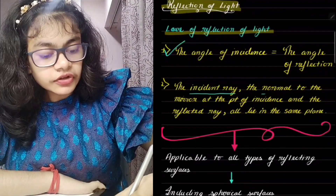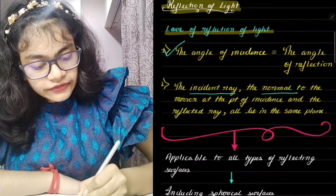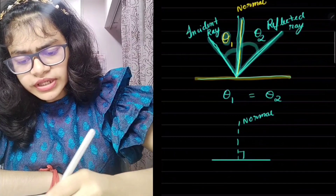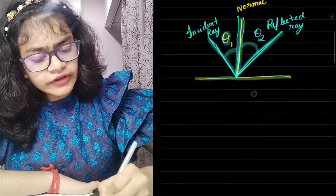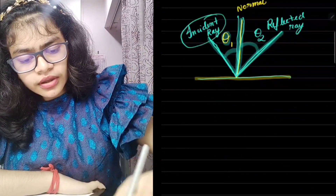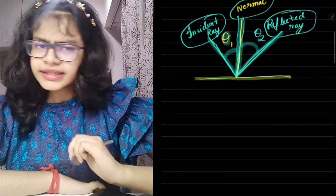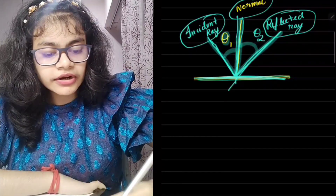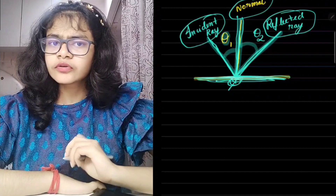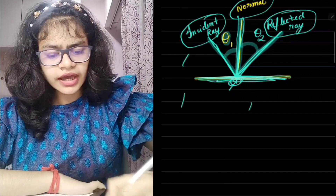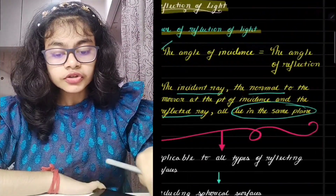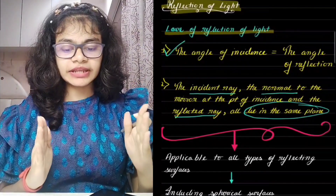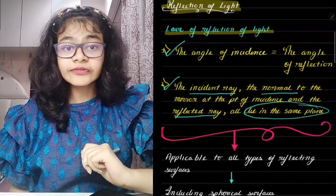The second point: the incident ray, the normal, and the reflected ray all lie in the same plane. Meaning my incident ray, reflected ray, and normal — all are in the same plane. Incident ray, normal, reflected ray — everything is in the same plane. And these are my two laws of reflection of light.